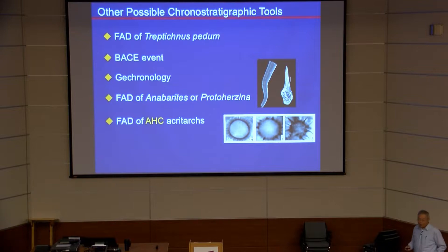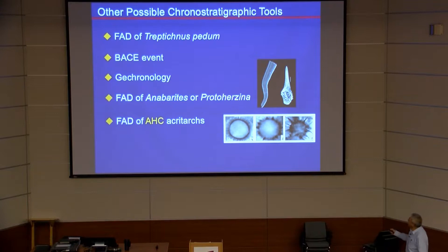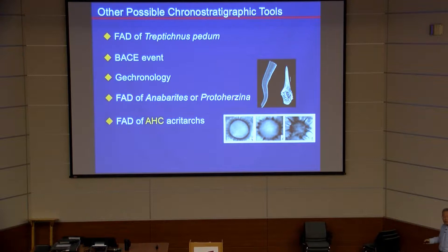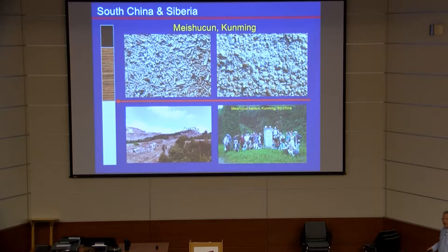Except for trace fossils, chemostratigraphy, and geochronology, there are two other useful tools. One major tool is small shelly fossils: if you find Cambrian-type small shelly fossils, people think this should be Cambrian — there are very distinct taxa. Another tool is organic-walled fossils like acritarchs: if you find the smaller spiny acritarchs you can also place those in the Cambrian. Today I'm going to show new information on how we use these tools to define the base of Cambrian in China and Siberia.